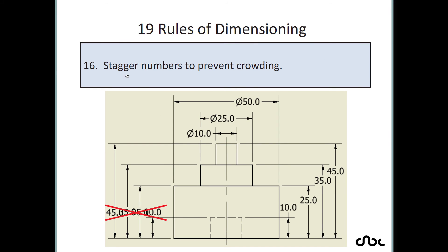Rule number 16: stagger dimension numbers to prevent crowding. If you have a cluttered or clumsy placement of numbers on one side, it is better to move some dimensions out and stagger them — placing them alternately here and there — so that all dimension values are clearly visible.